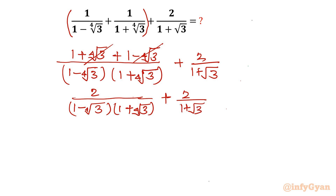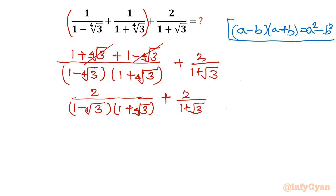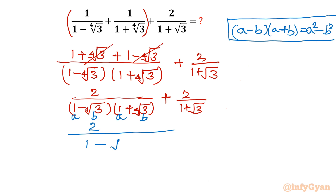Now I will apply the difference of squares identity from algebra: a minus b times a plus b equals a squared minus b squared. Applying this here, I write 2 over 1 squared minus (4th root of 3) squared, plus 2 over 1 plus square root of 3.